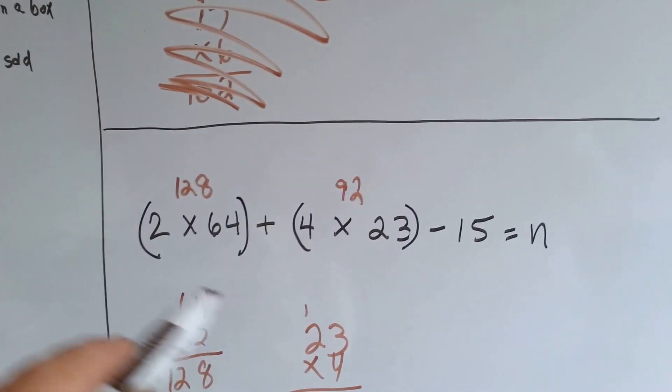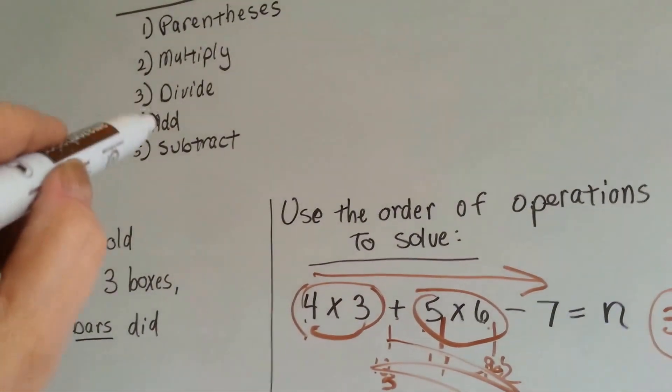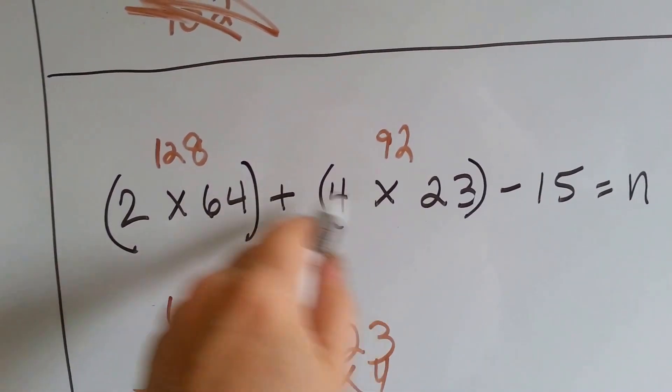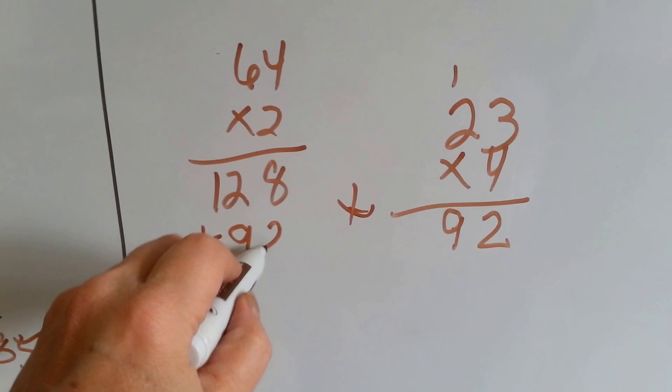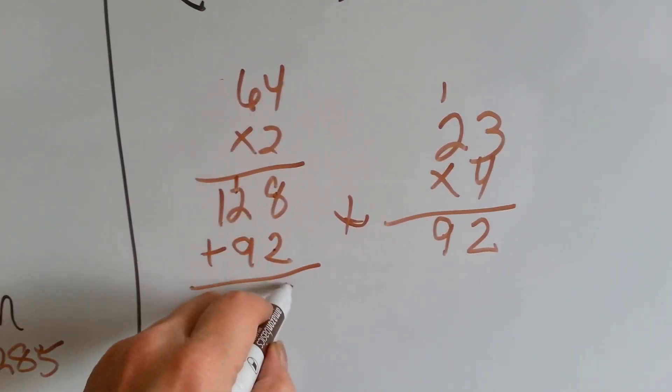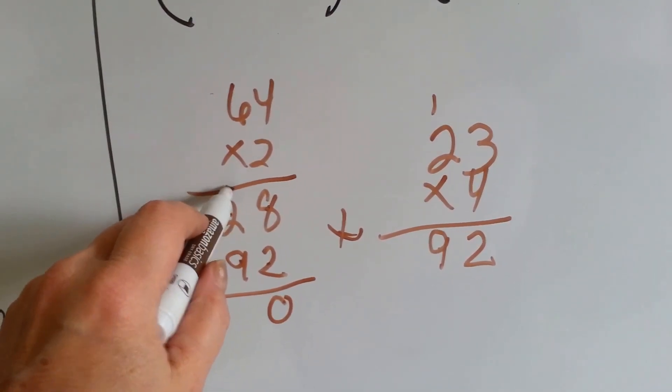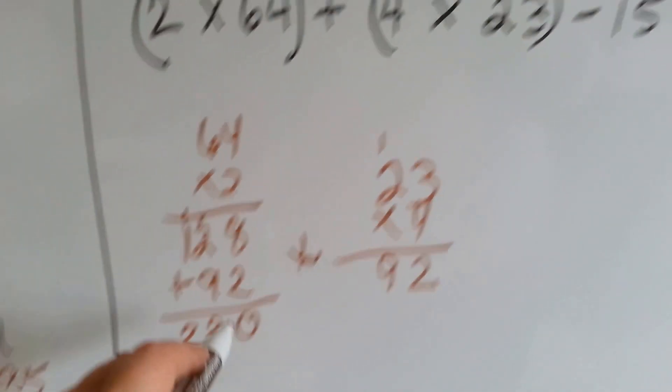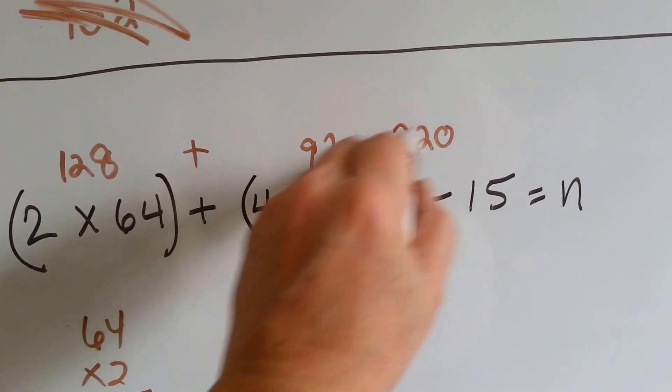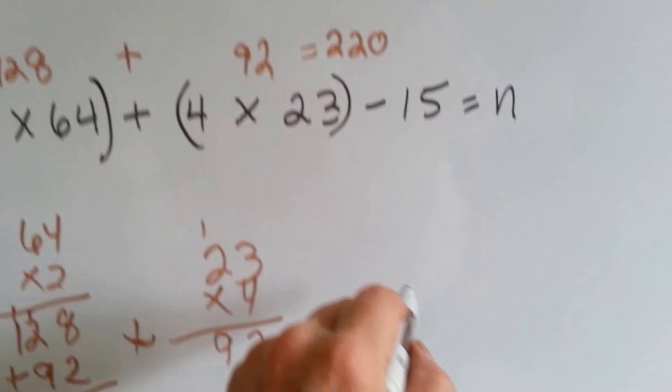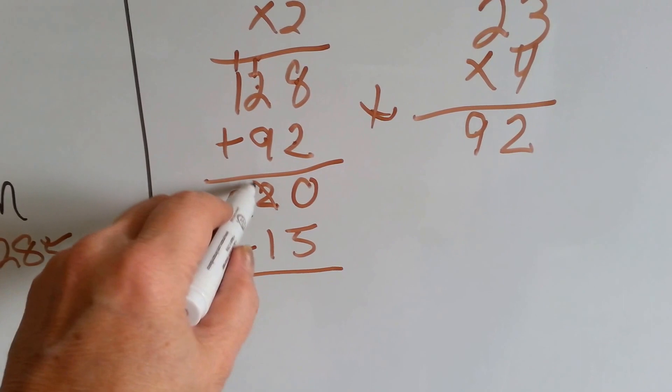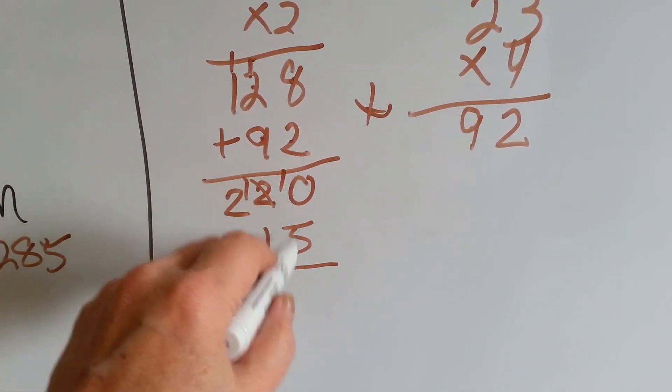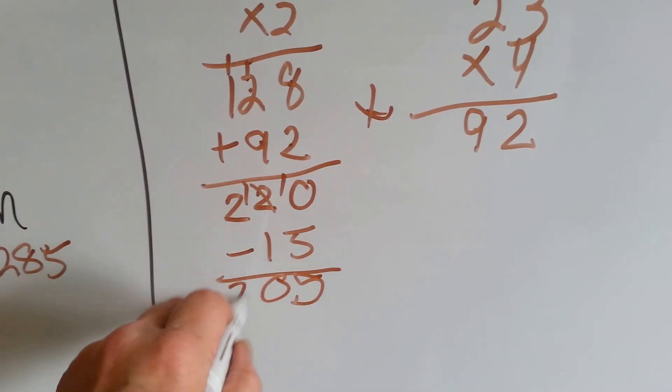We multiplied. There is no division. So we can skip that one. Then it says to add and then subtract. So we're supposed to add this group to this group. The 128 to the 92. We're supposed to add those two together. 128 plus 92. 8 plus 2 is 10. We carry over the 1 and put the 0 down. 9 plus 2 is 11 plus 1 more is 12. And 1 and 1 is 2. So we have 220. Now it says to subtract 15. 220 minus 15. We can't have 0 and take 5 away so we have to borrow it from the 2. It becomes a 1 and that 0 becomes a 10. 10 take away 5 is 5. And 1 take away 1 is 0. And we drop down the 2 and we have 205. So n equals 205.